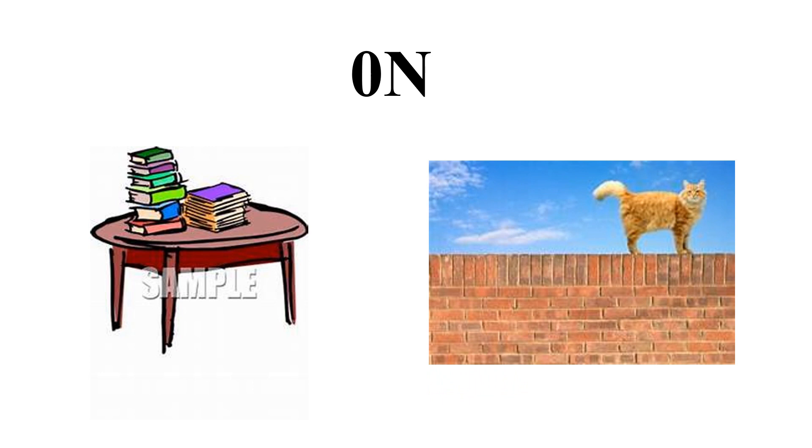In this picture, you can see books and table. Where are the books kept here? Absolutely right. The books are kept here on the table. O-N. On. Look at this picture. Where is the pussy cat standing? The cat is standing on a wall. O-N. On.